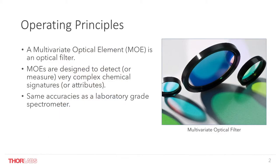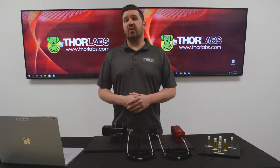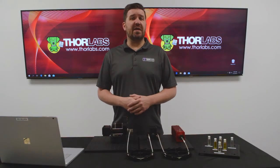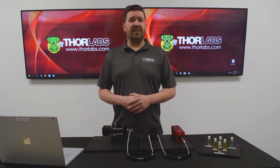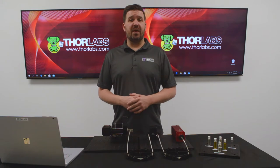Multivariate optical computing is an exciting technology, giving us the ability to design an optical filter, or set of filters, which are encoded to detect specific chemical signatures. These filters, also called multivariate optical elements, can be integrated into a variety of optical configurations, making them great candidates for solving your real-time, application-specific chemical sensing needs. In contrast to traditional bandpass filters, which are typically focused on a very narrow region of the spectrum, MOEs are broadband filters which leverage tens or hundreds of wavelengths at the same time. This allows us to maximize the amount of light coming from a sample, which translates into greater sensitivity and specificity.